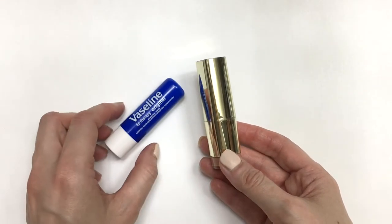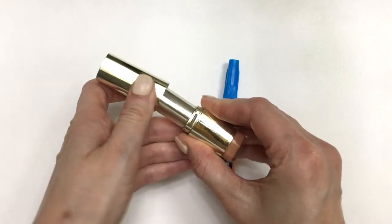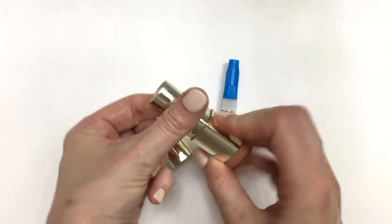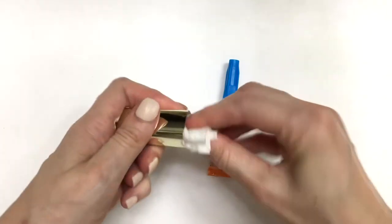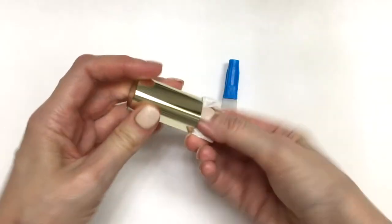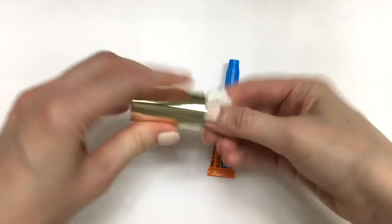For my lipstick option, I'm using this Milani square lipstick. I'm going to clean the inside of the cap just for any residue that it may have. Remember, the lipstick is empty. I'm using this square one because my glue has this edge.